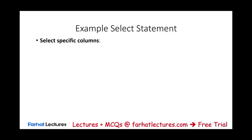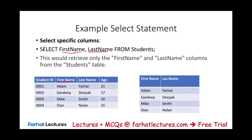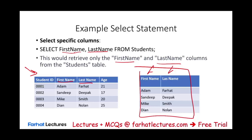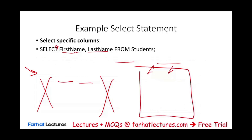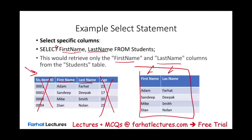We can also select specific columns. Rather than selecting the whole table, we can write SELECT first_name, last_name FROM student. This retrieves only the first name and last name columns, without the age or student ID. If we want all columns, we use SELECT * and name the table — the star selects all columns. But we can specify just certain columns like first name and last name.